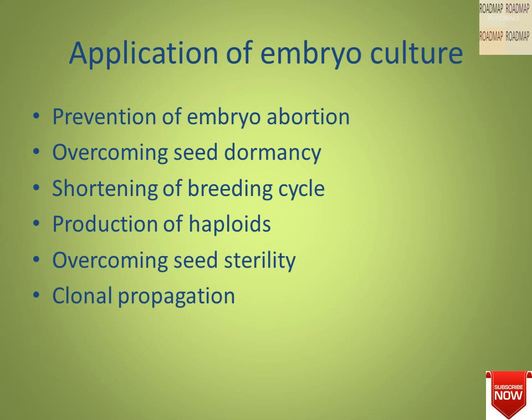The second application is overcoming seed dormancy. Seed dormancy is caused by several factors like endogenous inhibitors, embryo immaturity, specific light and temperature requirements, and dry storage requirements. In some plants, the period of seed dormancy itself is too long. Embryo culture is successfully applied to overcome seed dormancy and produce viable seedlings in plant species.